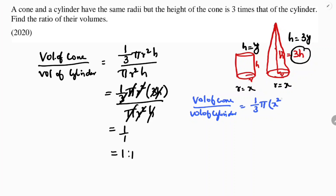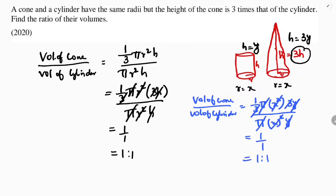The cone's height is 3y, and the cylinder is π x² y. Here y and y cancel, x² and x², π and π, and 3 and 3 all cancel. So the ratio is confirmed to be 1 : 1.